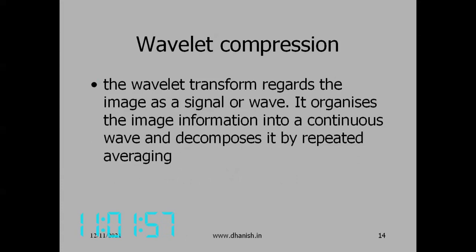Wavelet compression regards the image as a signal or a wave. It organizes the image information into a continuous wave and decomposes it by repeated averaging — choosing a certain width and taking the average, then changing the width for various frequencies. JPEG 2000 (JP2000) was introduced in 2000 using this approach. Even now Photoshop supports it, but mostly nobody uses JPEG 2000. Ten years ago people predicted it would become the future standard, but that has not happened — people are still mostly using standard JPEG.